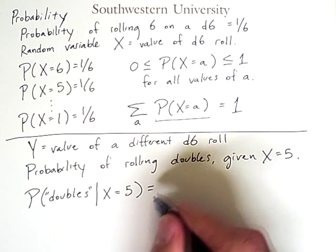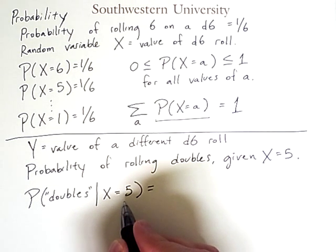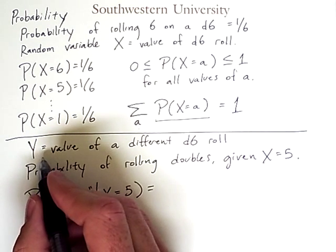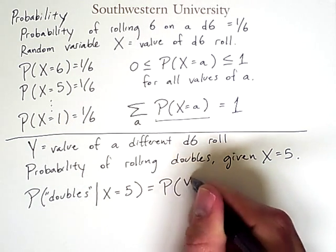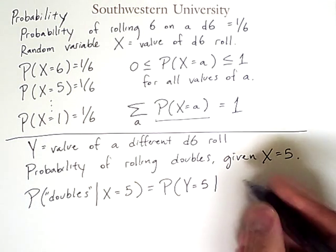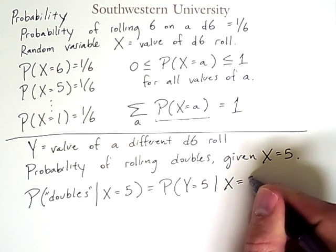Now, because getting doubles will require Y to be 5 as well, what we're really asking is, what is the probability that Y equals 5 given that X equals 5?